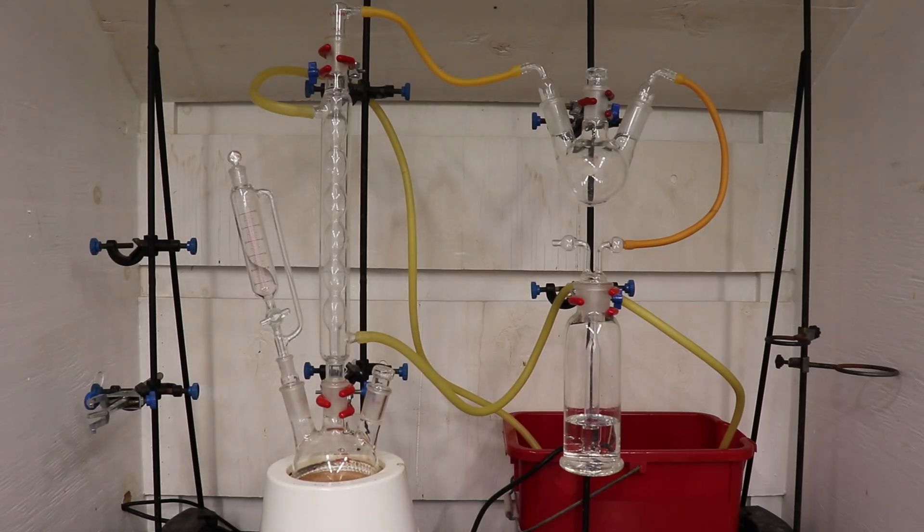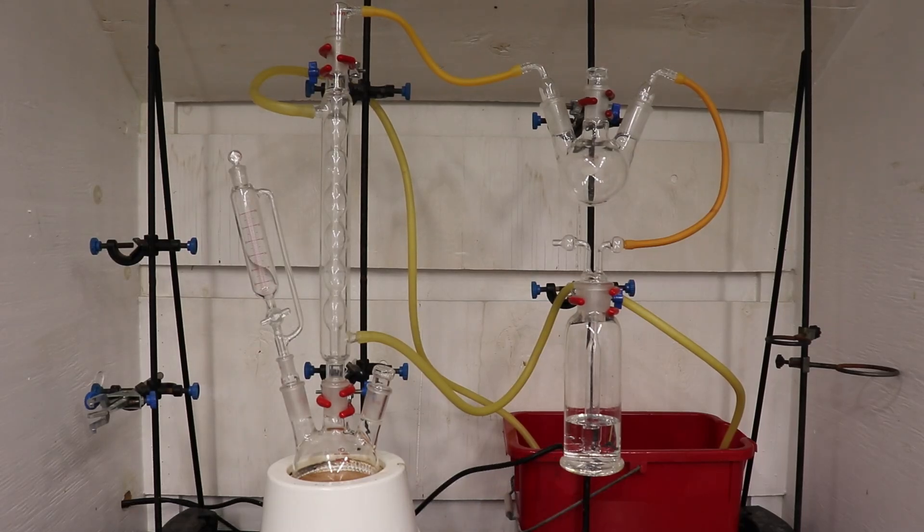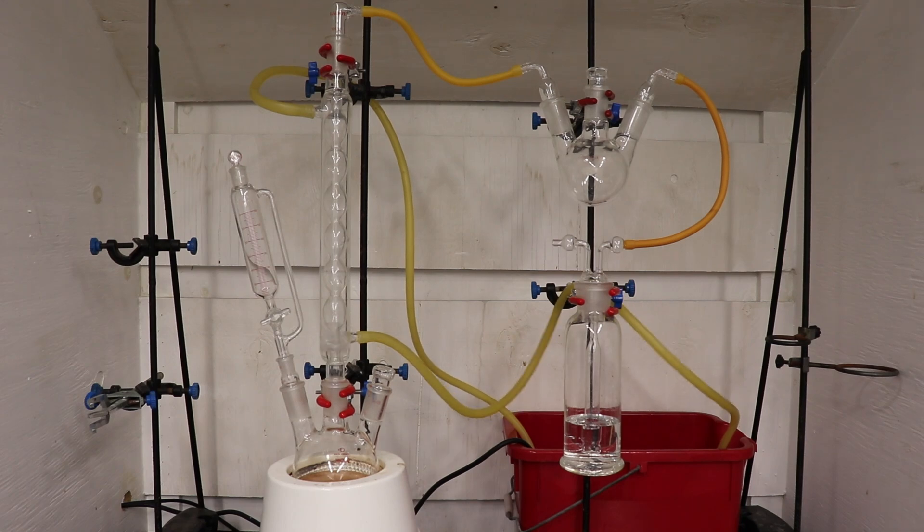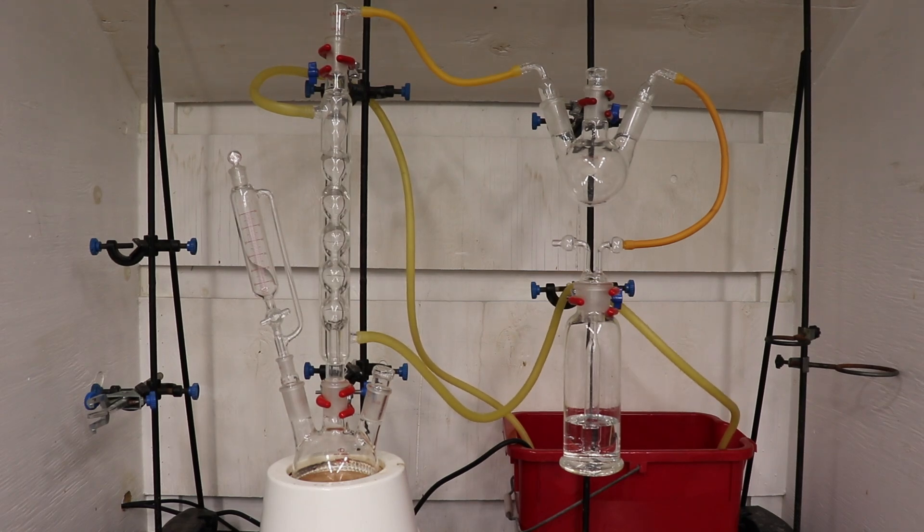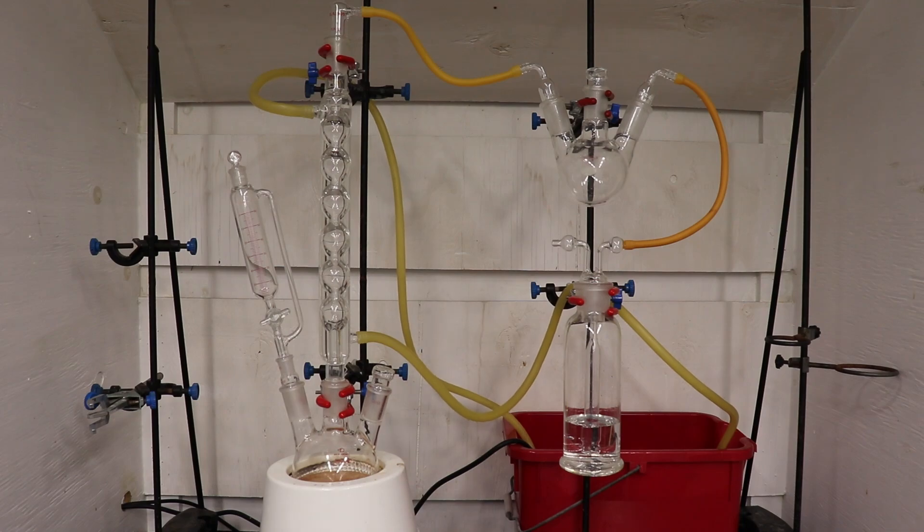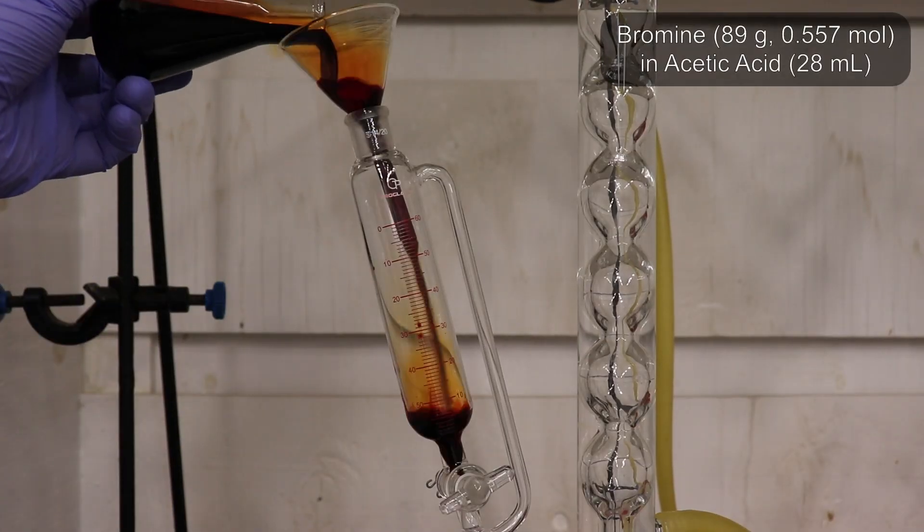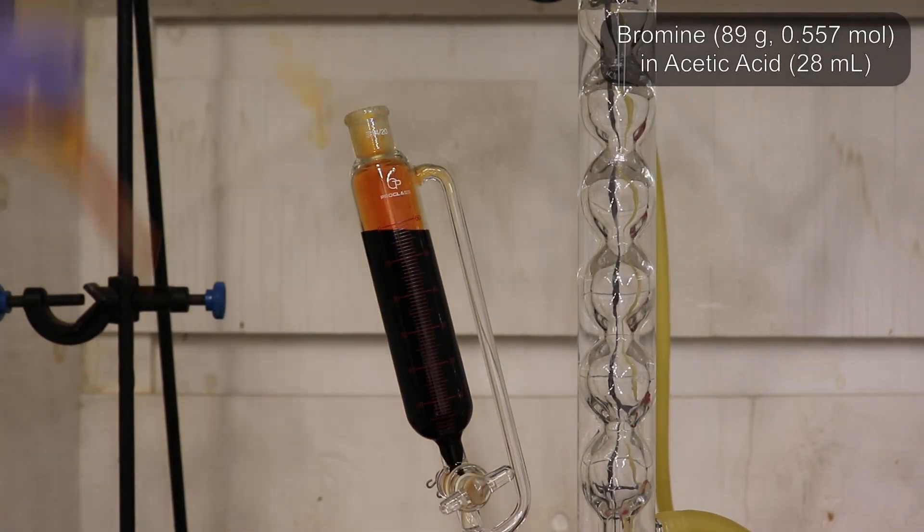Attached to the apparatus is a gas washing bottle loaded with saturated sodium bicarbonate solution to absorb the hydrogen bromide gas evolved during bromination. There's also an inline trap to prevent suckback of the washing solution into the reaction flask.